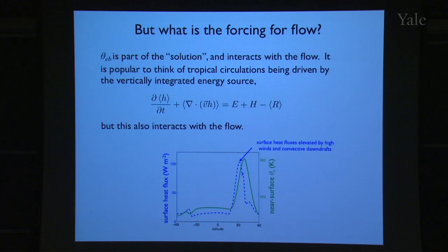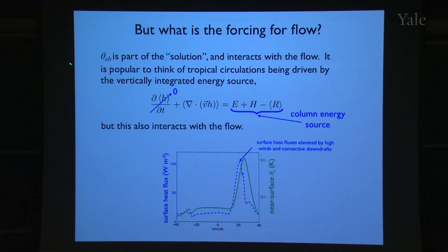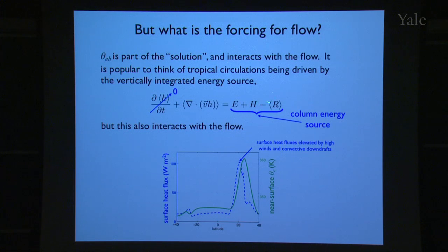This is an equation for the vertically integrated moist static energy — the total energy content including the energy stored in water vapor. In steady state, with this time derivative set to zero, we just have the divergence of an energy flux equal to the column energy sources: surface evaporation plus surface sensible heat flux minus energy extracted by radiative cooling.